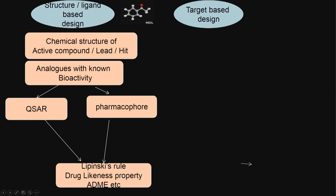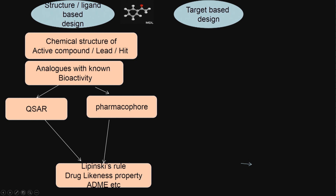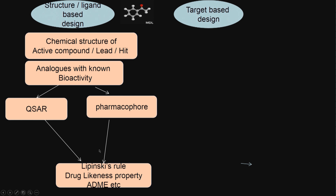In the ligand based approach, I know the chemical structures of some active compounds — we call them leads or hits — and then I design and synthesize new analogs with known bioactivity. We do something called a quantitative structure activity relationship: what structural features are required for the activity. Or I do something called pharmacophore modeling — I know what functional groups are responsible for certain activities. I try to retain all these and design new molecules by retaining certain important functional properties, developing structure activity relationships. Later I use drug likeness properties, Lipinski's rule, and ADME properties to shortlist molecules. This is the ligand based approach.